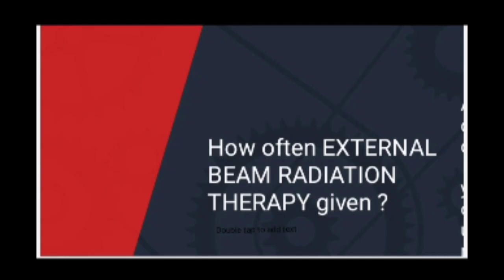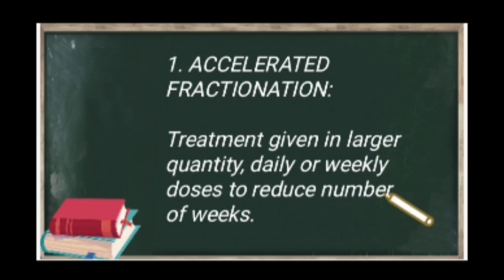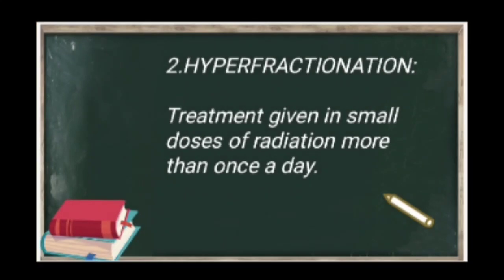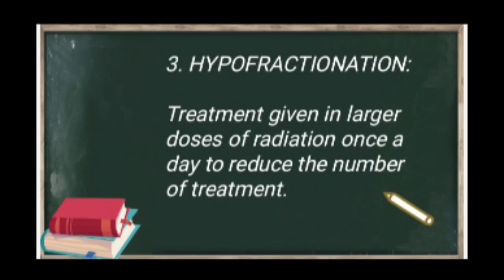External beam radiation therapy is given in three ways: number one, accelerated fractionation — the treatment given in small doses of radiation more than once a day; number two, hyperfractionation — the treatment given in smaller doses of radiation more than once a day; and number three, hypofractionation — the treatment given in larger doses of radiation once a day to reduce the number of treatments.